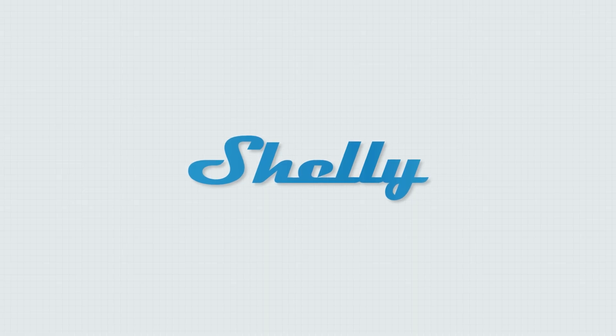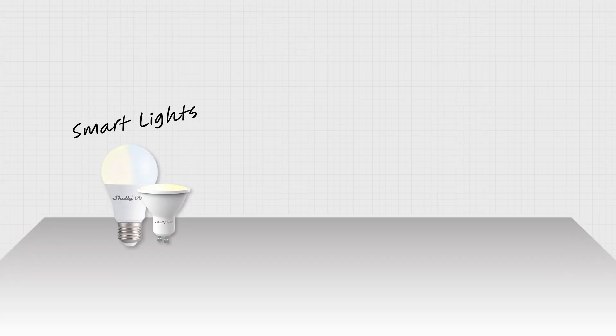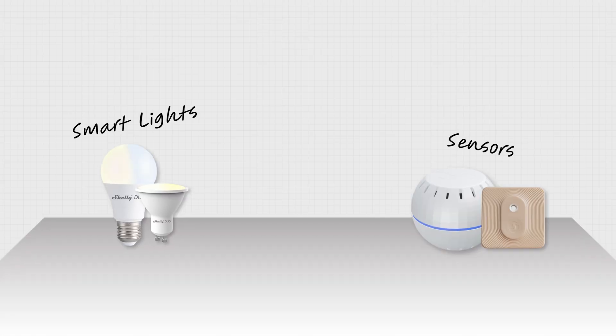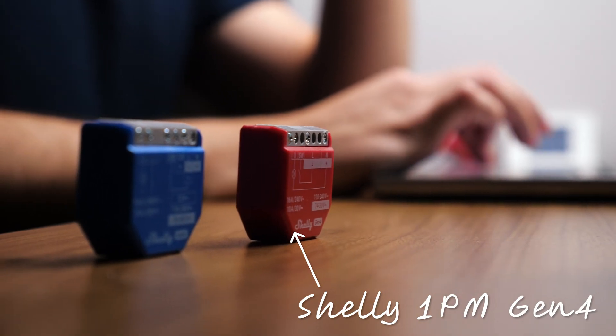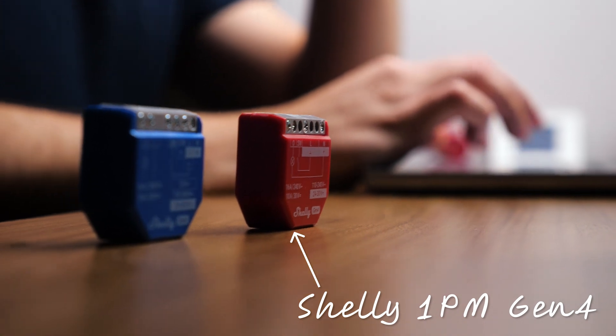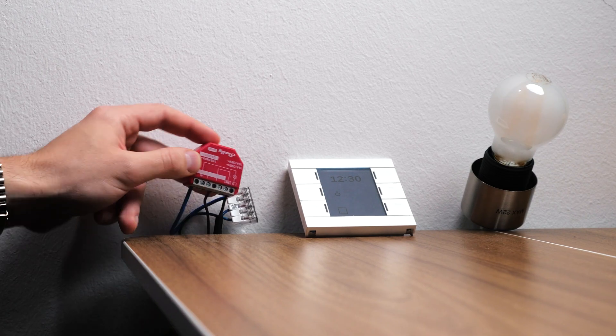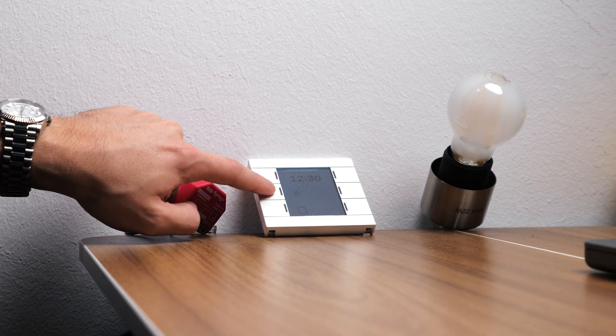Now, if you don't know Shelly, you might be living under a rock. All jokes aside, Shelly is one of the fastest growing IoT companies, and they offer a variety of smart products like smart lights, sensors, and more. But their most notable products, and what they're most known for, are these smart relays that you can use to make almost any other non-smart device smart.